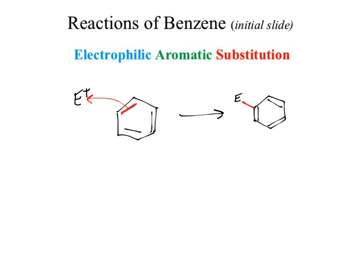So, what's the result? Where's the carbocation? The carbocation is where the electrophile is not attached — not where the electrophile is, because that carbon already has a bond to the electrophile and there's an implied hydrogen there.